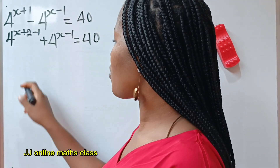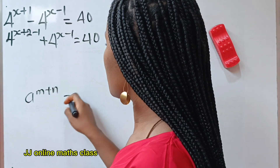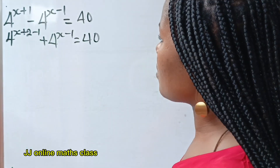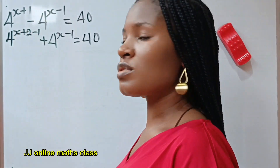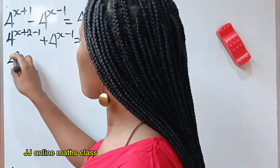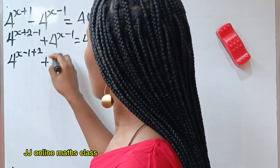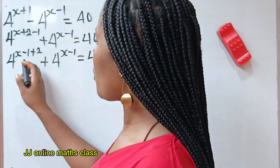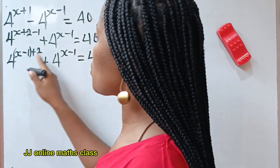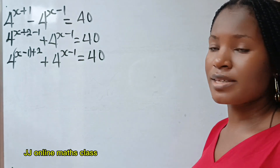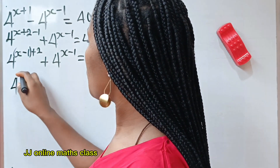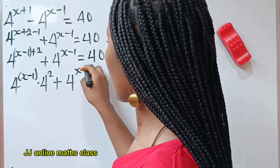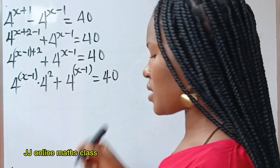Remember that when you have a raised to the power of m plus n, this is equal to a to the power of m multiplied by a to the power of n. As a result of that, I want to bring minus 1 to this side and take plus 2 to the other side. So I will have 4^(x minus 1 plus 2) plus 4^(x minus 1) is equal to 40.